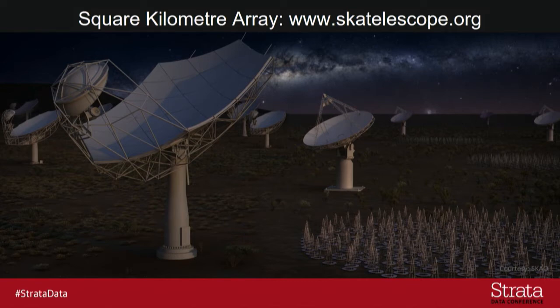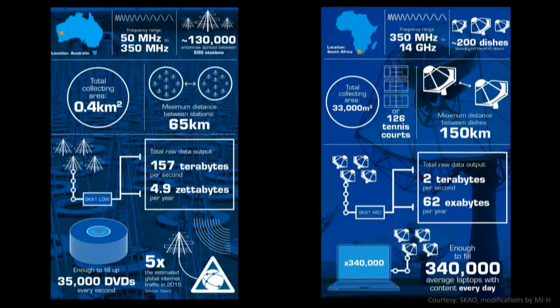In terms of understanding the data rates for the SKA, I refer you to these two graphics, splitting the two telescopes into their component parts. The telescope in South Africa with 200 dishes produces around two terabytes of data per second raw data — 62 exabytes a year. But the telescope in Australia, the low-frequency telescope, produces 157 terabytes of data per second: 4.9 zettabytes of data per year. We have to process that in real time, the equivalent of 35,000 DVDs every second.